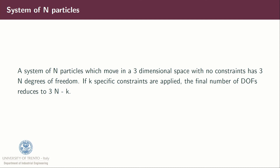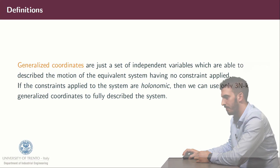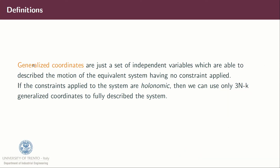Let's talk about constraints. A system of N particles which can move in three-dimensional space with no constraints has 3 times N degrees of freedom. If we impose k specific constraints, the final number of degrees of freedom reduces to 3N minus k. Before defining types of constraints, let's define generalized coordinates: they are a set of independent variables able to describe the motion of the equivalent unconstrained system. If the constraints are holonomic, we can use only 3N minus k generalized coordinates to fully describe the system.